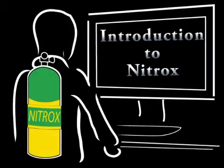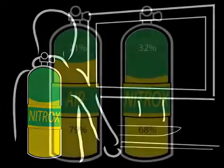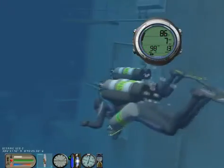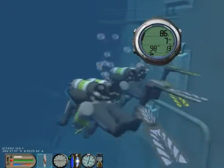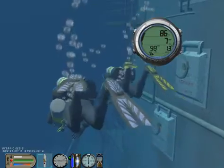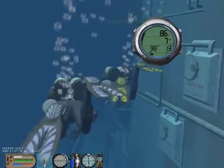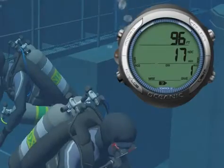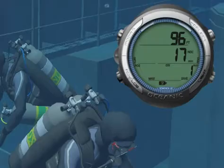As you have learned in the introduction to Nitrox class, Nitrox is a breathing gas made from an oxygen-nitrogen mix with an oxygen percentage higher than 21%. You have also learned that Nitrox allows longer dives and or reduces the risk of incurring decompression sickness, but could also cause oxygen toxicity.